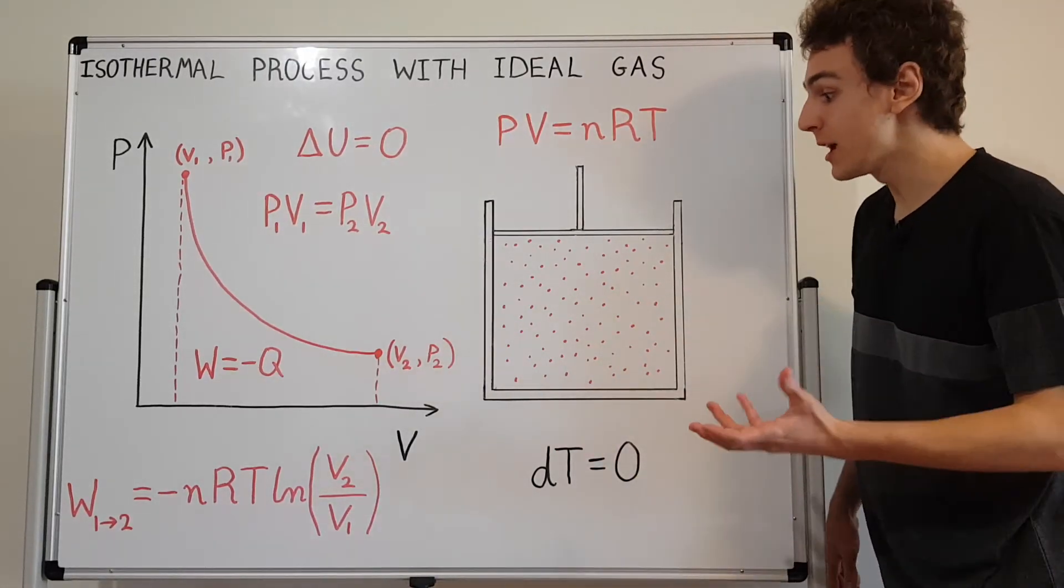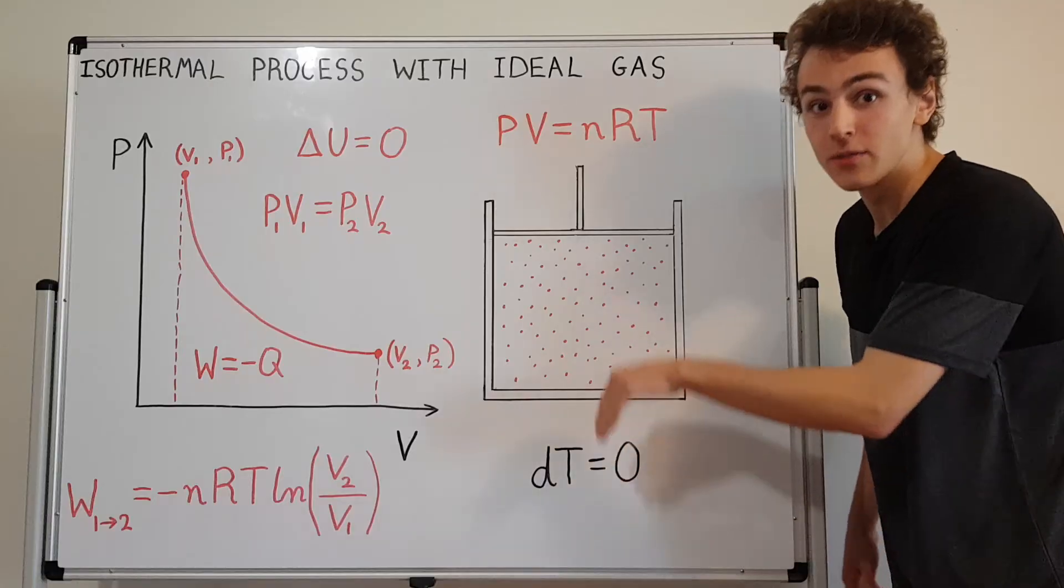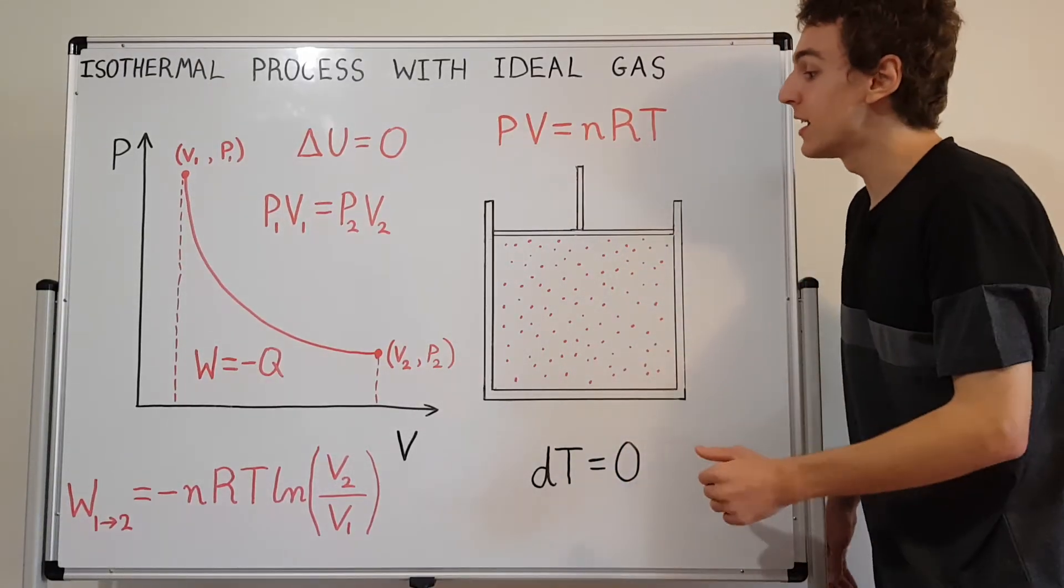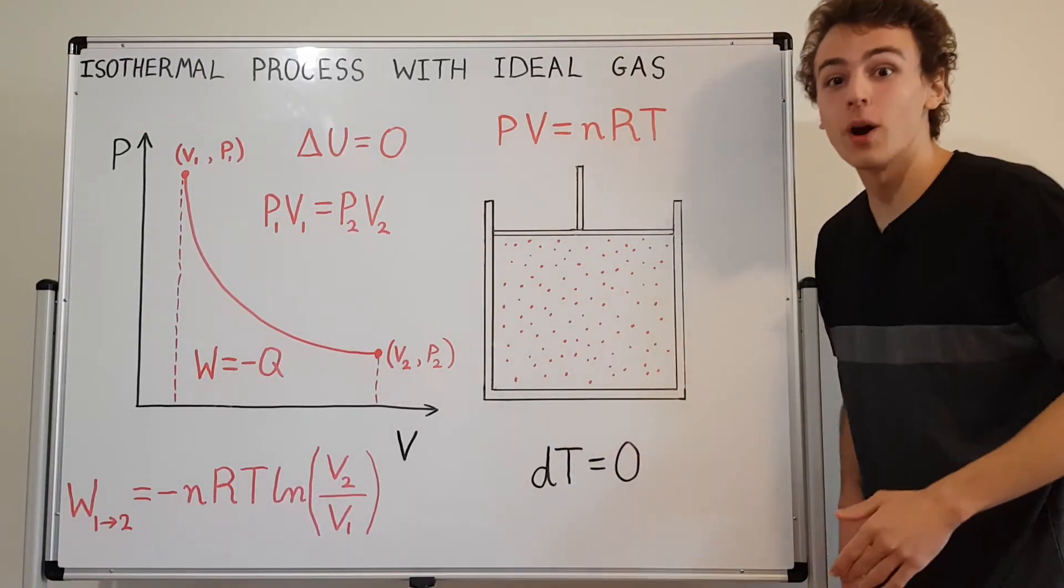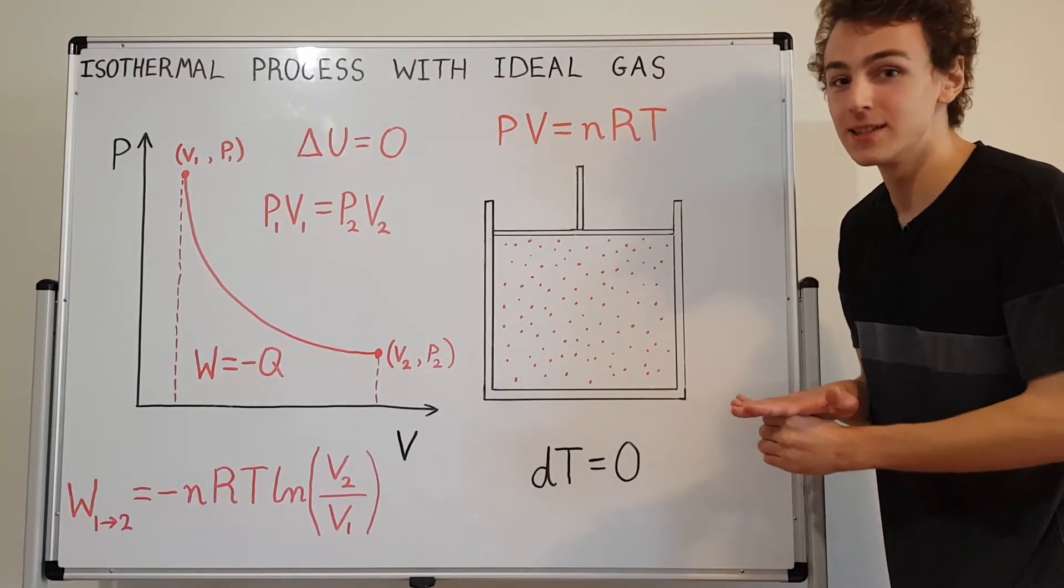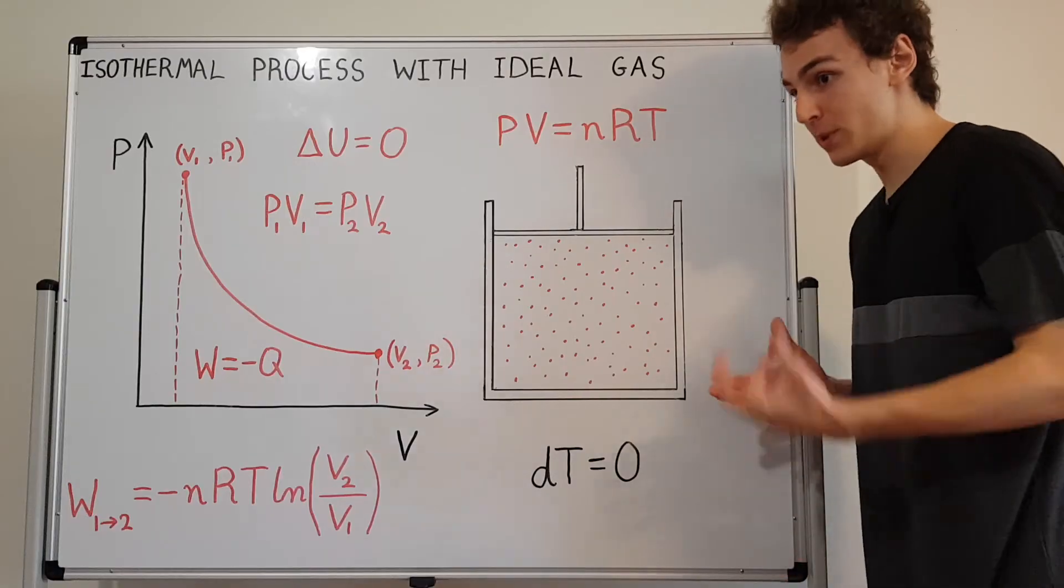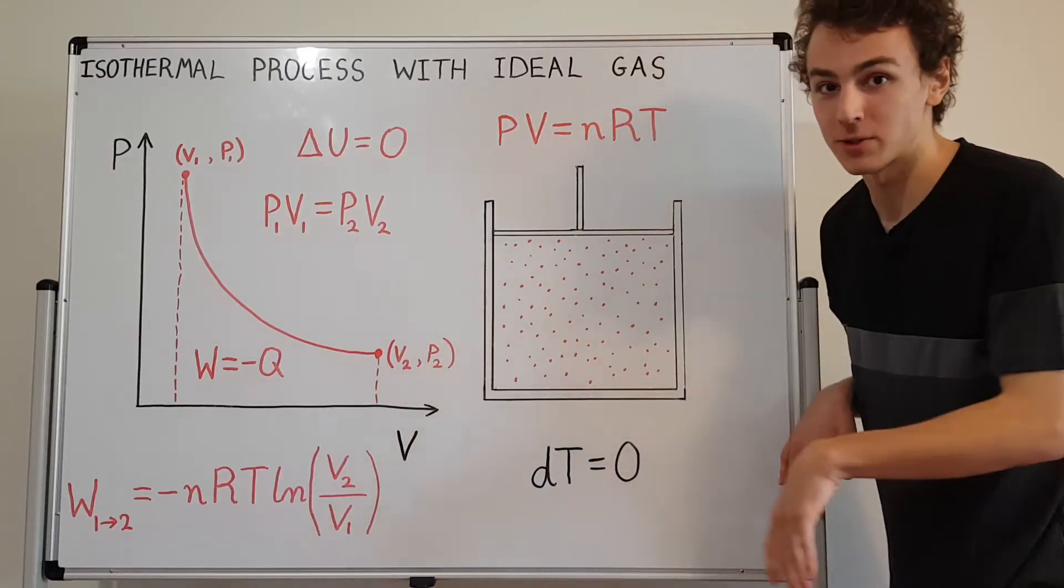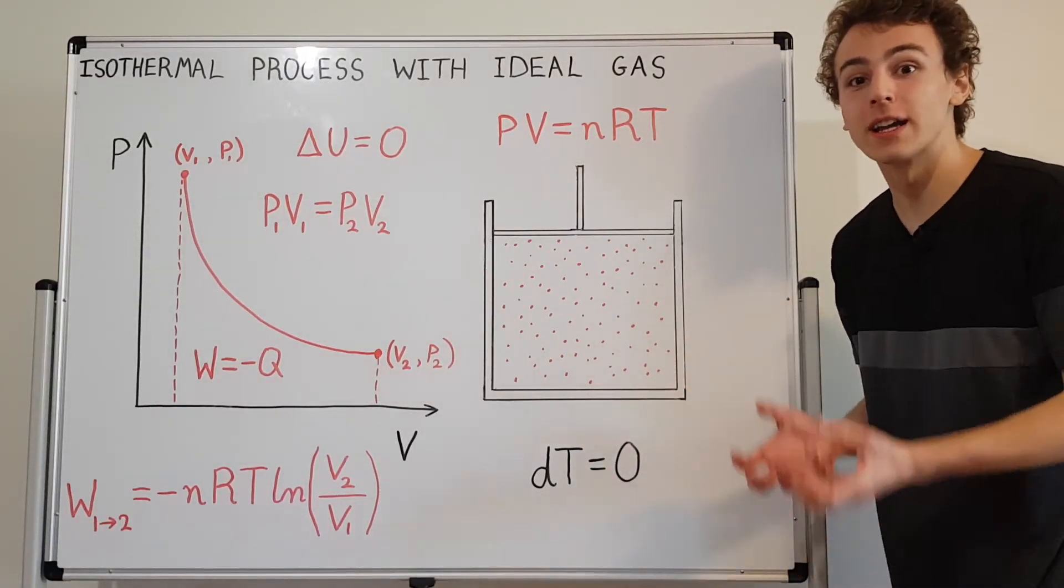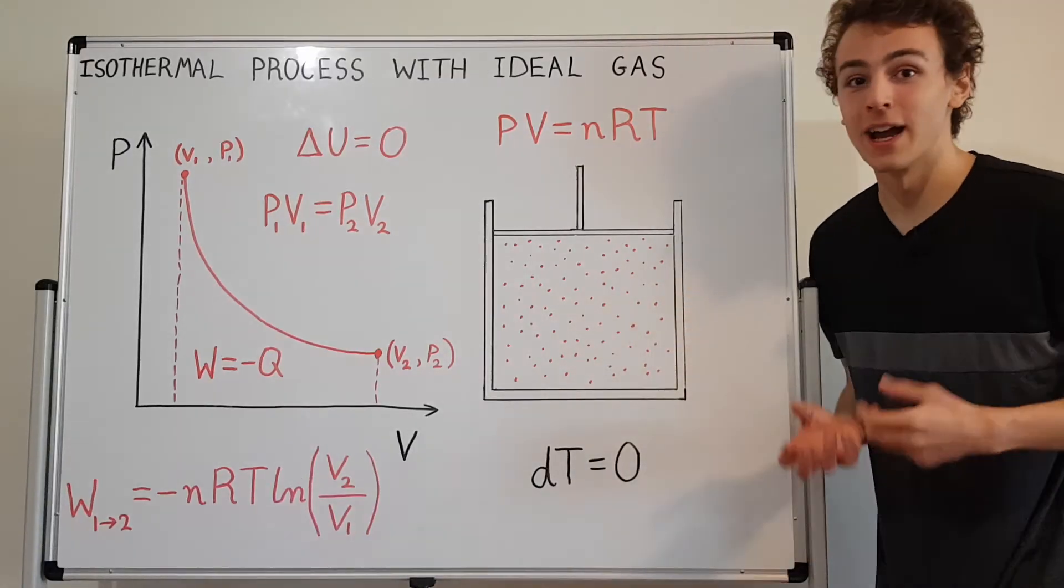Or to the contrary, if you had heat flowing out, if we had a negative sign for the heat, then the compression work would be positive. Why? Because compression increases the internal energy of the gas. But to compensate for that, we've got to get heat flowing out. So the heat and the work are conspiring to keep the temperature at the same value.